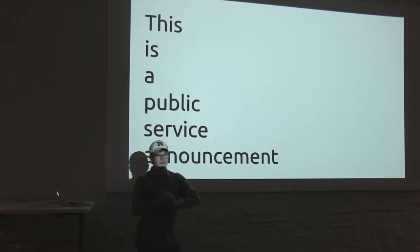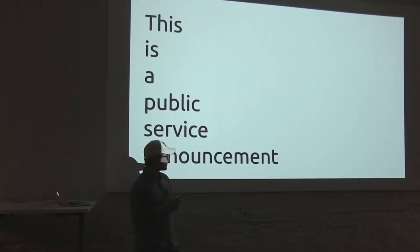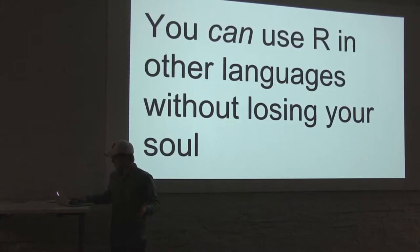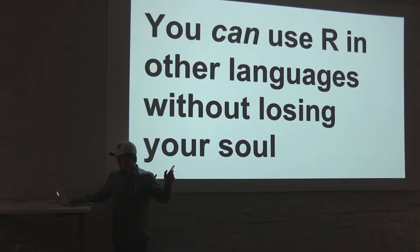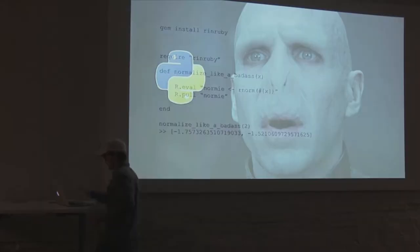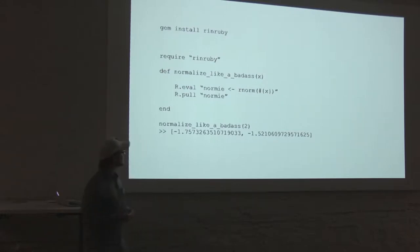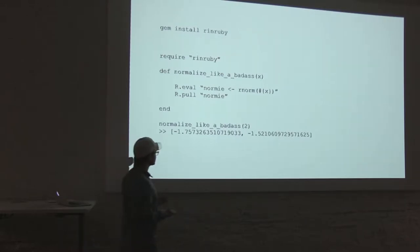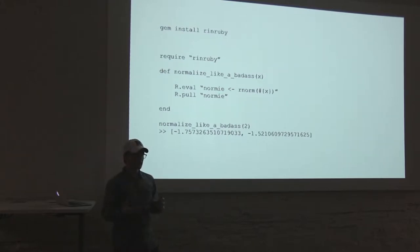Most people are under the impression that you can only use R with Python if you want to use it with another language, which is a complete lie. You don't have to do that — you can use R in other languages and not lose your soul. It's very simple: you install a gem called RinRuby, then you just require it and you can use R inside of your code. You can use these data functions which are normally harder to do in Ruby, and just do it right inside of R.